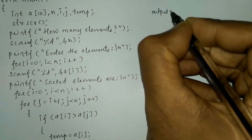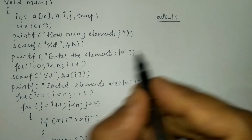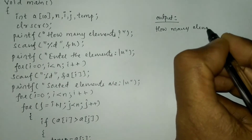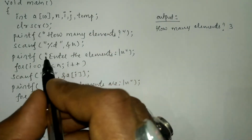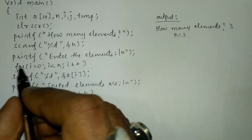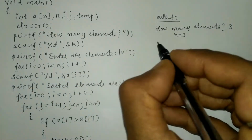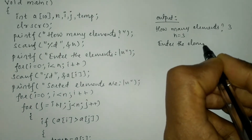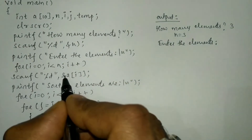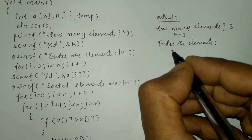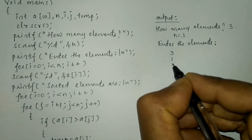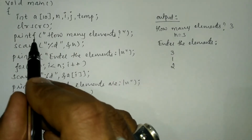Now let us take an example. Once we compile and run this program it will ask the user 'how many elements?' — for example, I'm going to enter three, so n equals three. Then it asks 'enter the elements', and we enter three elements: three, one, and two.